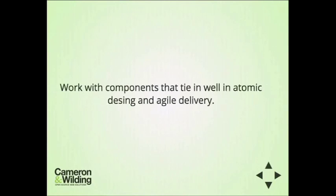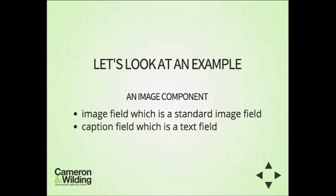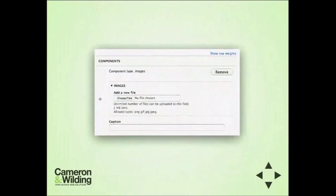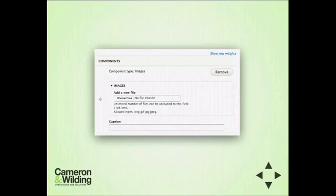Before we get to the advanced use cases, let's look at a simple example. Imagine we need an image in our content type. The easiest way to do that is to create a paragraph component with an image field and a caption field. That sits within a node as a paragraph type — what I usually refer to as a component. You can add as many of these components as you like, so if you want multiple images, you can add more.